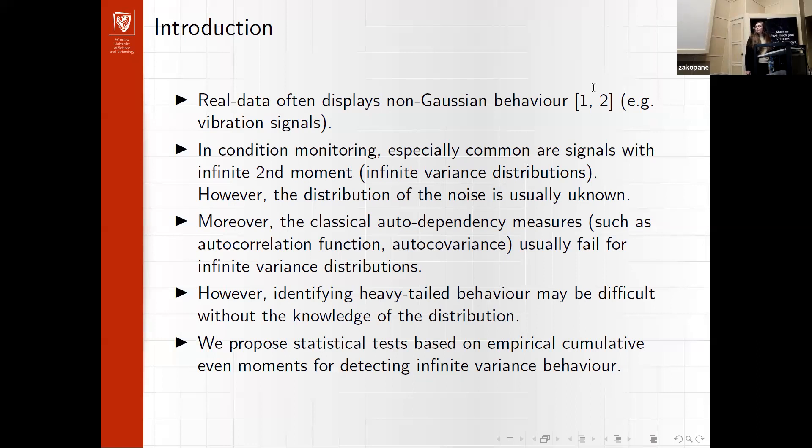Moreover, identifying heavy-tailed behaviour may be difficult when we do not know the distribution of the data. We propose statistical tests based on empirical cumulative even moment and its parametric notation for detecting infinite variance behavior.